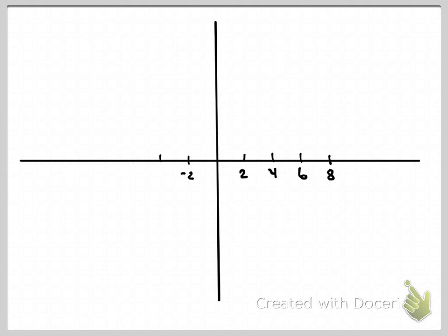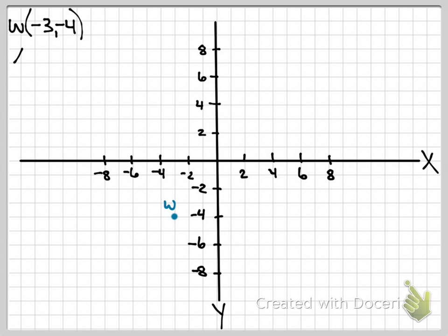Now, we've got our coordinate plane. What axis goes straight across? X. What axis goes up and down? Y. So, if I give you point W is at negative 3, negative 4, which way do I go on X? Left. And which way do I go on Y? Down. Left 3, down 4. Plot my W.